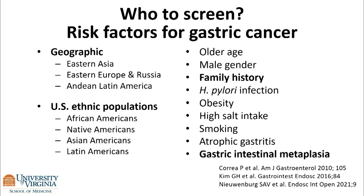Who to screen? We've talked about geographic and ethnic populations — these are really surrogate markers for what we're trying to get at. Family history is an important clue, as is gastric intestinal metaplasia.